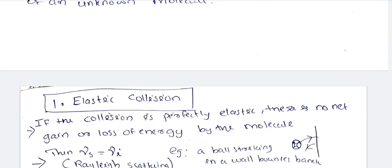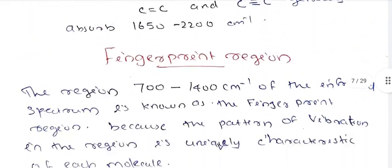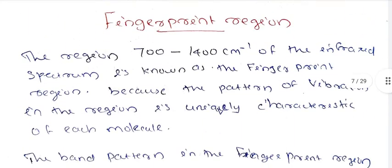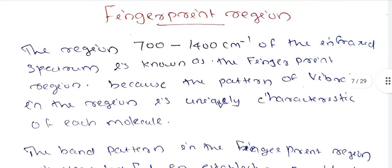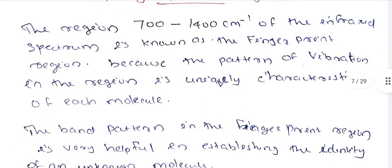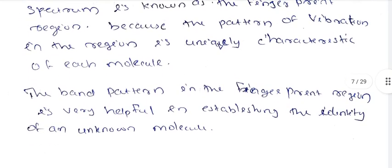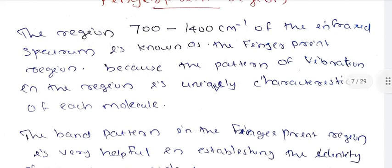This is a vibrational spectrum. In the vibration region, 700 to 1,400 cm⁻¹, that is why the vibrations are unique. This is the infrared spectrum. This is the fingerprint region because the pattern of vibration will be unique for each and every molecule.